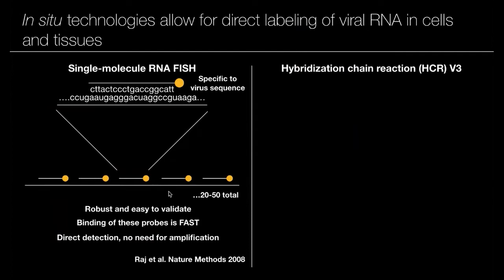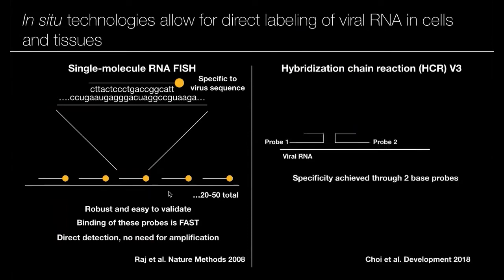The other method we've been using is based on amplification. It's a method called HCR V3 that came out of Niles Pierce's lab. We really like it because while it does have amplification, we find that it's very specific and it works really well in preserved tissues, particularly from autopsy. The basic principle is that it has two DNA base probes that sit side by side to each other, and specificity is achieved through having both of them next to each other and requiring both for amplification.